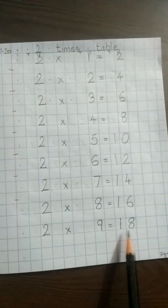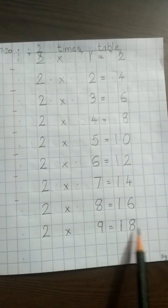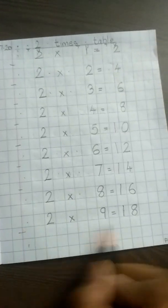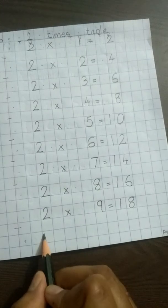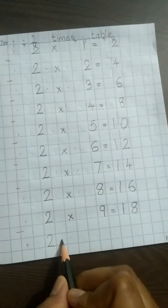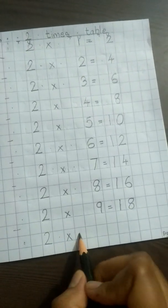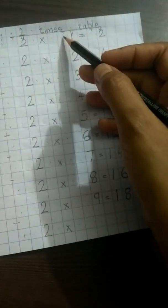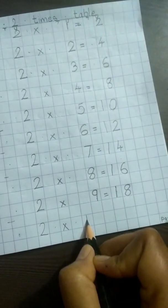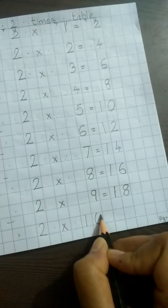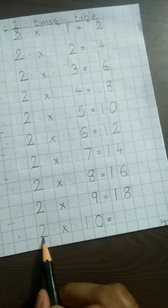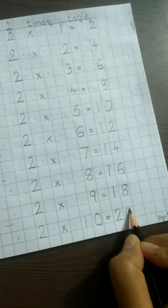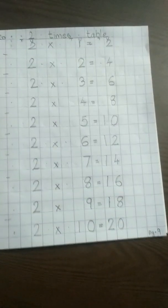So now we have reached till '2 9s are 18'. Now let's see how to write '2 10s are'. Again leave a line, then leave a box, then 2 is in the units place. 2 dot multiplication sign, that is a cross. Now 10 is again 1 ten and 0 units. So we write 1 in the tens column and 0 in the units column. Therefore we write: 2 10s are 20. I hope you understood, children. Thank you.